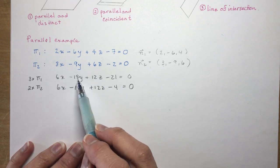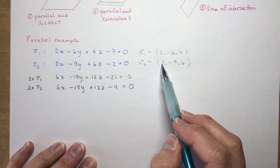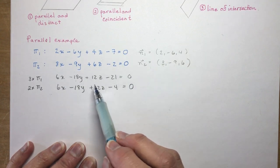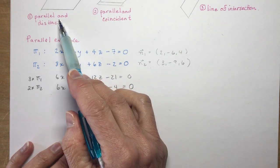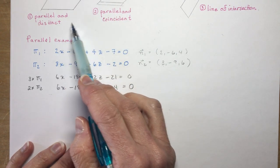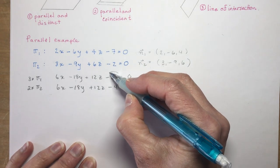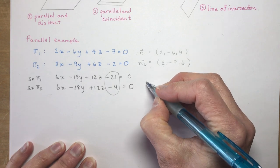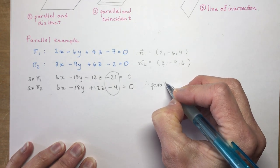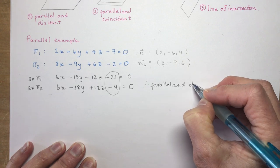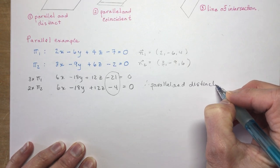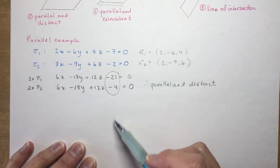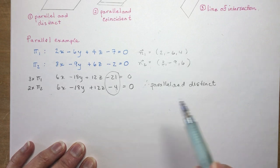In this case, the normals are the same after scaling. Now, are these planes parallel and coincident or parallel and distinct? If coincident, the constant term would have to be the same — and it's not. So therefore these are parallel and distinct. It's just like y = mx + b: same slope, different y-intercept. These planes do not intersect at all.